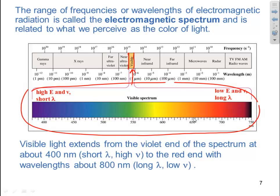Visible light extends from the violet end of the spectrum at about 400 nanometers, which has short wavelengths and high frequencies. Basically, the shorter the wavelength, the higher the energy and the higher the frequency. They're inversely proportional. To the red end of the wavelength at 800 nanometers, which has long wavelengths and low energy and low frequencies.